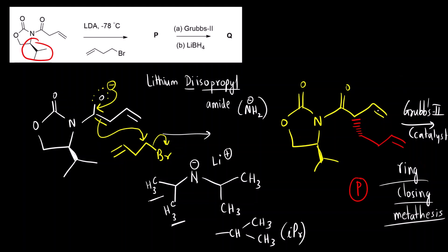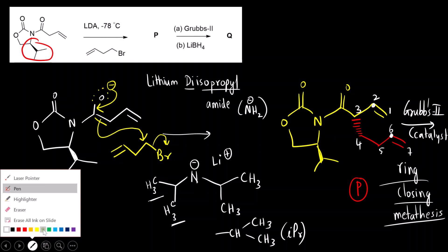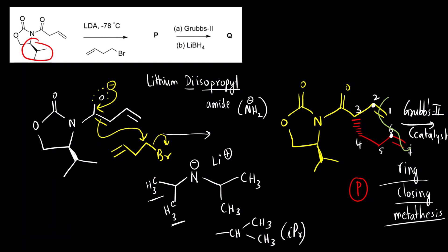What exactly happens here is the terminal double bonds are going to react. You count starting from the terminal carbon of one double bond: one, two, three, four, five, six, seven. You join these carbons — two carbons will be lost. Total there are seven carbons, so there will be formation of a five-membered ring. What is lost is CH2=CH2, ethene is lost as a byproduct.